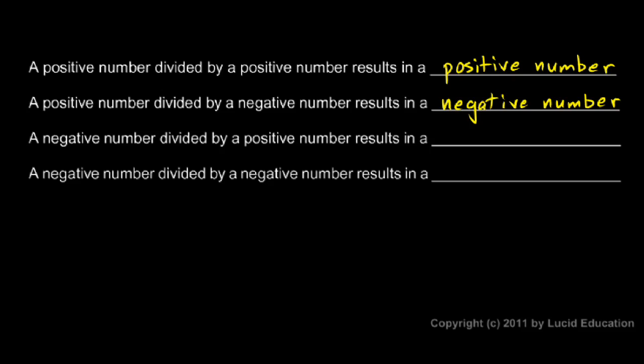The key idea isn't to memorize these four rules. You can think of the number of negative signs. Here we have one positive number and one negative number, so one negative number gives us a negative result. The same thing happens with a negative number divided by a positive number — one negative sign gives us a negative result.